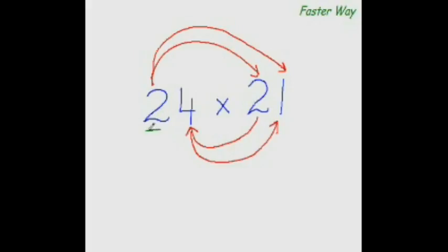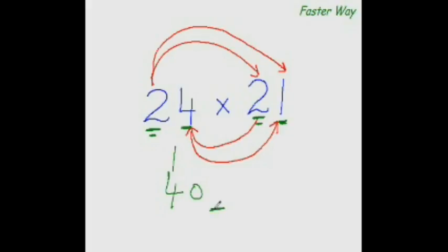Multiply the first digit of this number with the first digit of this number and write the product — so 2 times 2 is 4. Now multiply this digit again with the other digit of this number: 2 times 1 is 2. But before you put down 2, add to it the product of this digit and this digit — 4 times 2 is 8, and 8 plus 2 is 10. Carry forward 1, write 0 here. To get the last digit, multiply the last digits of both numbers: 4 times 1 is 4. So the answer is 504.